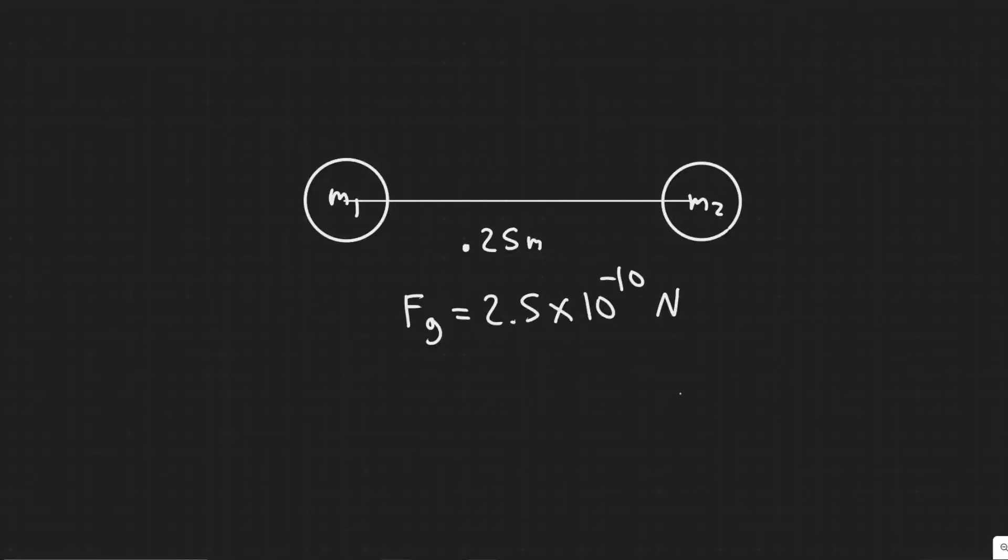So in this problem we're told two objects attract each other gravitationally with a force of 2.5 times 10 to the minus 10 newtons when they are 0.25 meters apart. Their total mass is four kilograms. Find their individual masses.